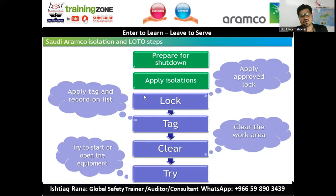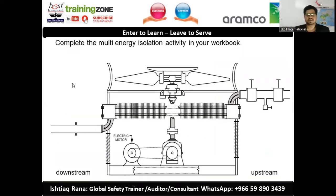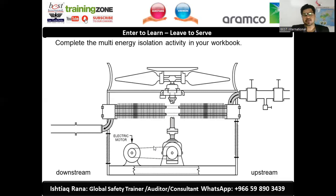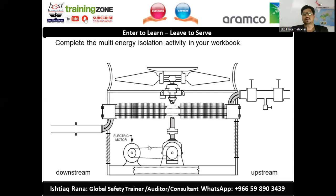Here's a practical example: you have a pipeline with a fin fan and a motor — electrical energy, mechanical energy, and liquid hydrocarbon lines with upstream and downstream connections. To isolate the motor, you switch it off, turn off the breaker, remove the wires, or remove the belt. For the fin fan, you use a mechanical block or chain. For the valves, you drain the liquid, perform water washing, steaming, and purging to bring LEL to zero, then close and lock and tag.